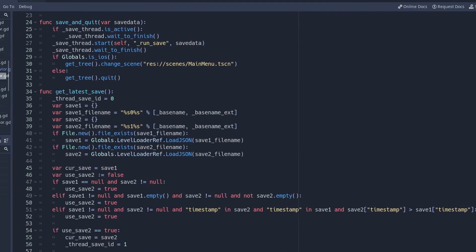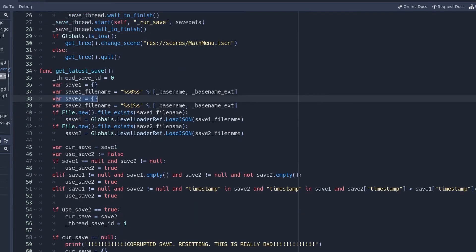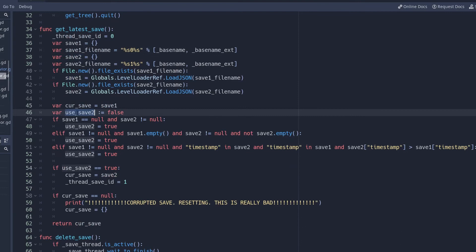If you know of a way to make an atomic save in GDScript I would really like if you'd leave a comment below this video because even though my backup system kind of works I would really like to try to make sure I don't have corrupted saves but I can't find a good way to do it in GDScript. So right now that's what I have.